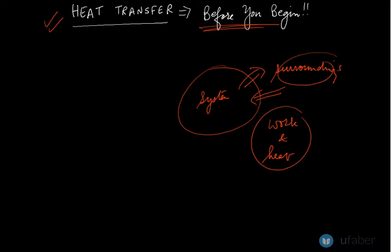For example, you have a bar, you have a rod, steel rod, and you are heating it at this end. So the temperature at this end let us say T1 and the temperature at this end is let us say T2.